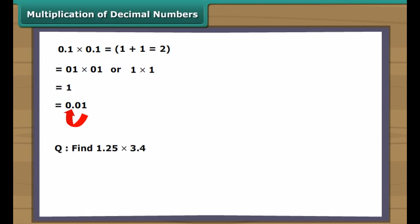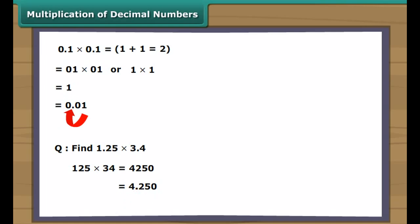Let us find the product of 1.25 and 3.4. These are first multiplied as whole numbers, giving 4250. There are a total of three digits on the right side of the decimal points in the given numbers. Counting three digits from the rightmost digit, the decimal point is placed before 2. Thus, we get 4.250 as the answer.